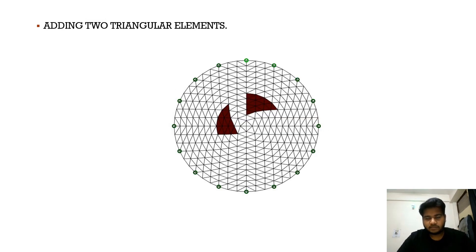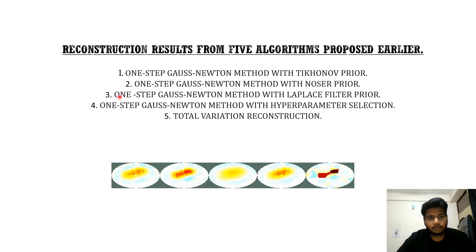Now we will use EIDORS software for image reconstruction. EIDORS has many built-in functions that can be used to generate a mesh, place objects at certain locations, solve the forward problem, and finally solve the inverse problem for image reconstruction. As you can see here, we have generated a mesh and placed two triangular elements at two locations. We then use EIDORS to forward-solve this model and solve the inverse problem to give us the conductivity distribution for each of the two objects. The fifth algorithm — total variation reconstruction — gives us the best result for this particular problem.